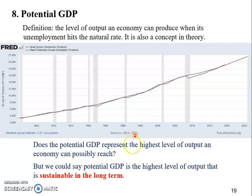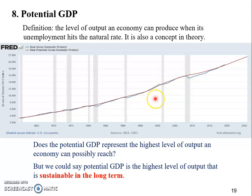Some professional economists say potential GDP is the highest level of output that is sustainable in the long term, and this expression is acceptable. 'Sustainable' matters here because, for example, in the late 1990s and early 2000s, actual GDP stayed above potential GDP, but that wasn't going to last forever. The economy during that period was likely overheated, and it eventually cooled down. That is why the red curve represents the highest level that is sustainable in the long term.